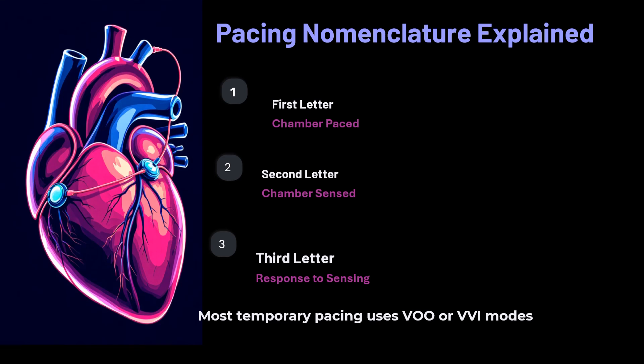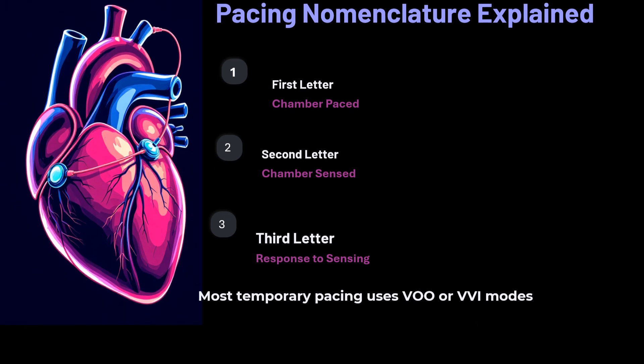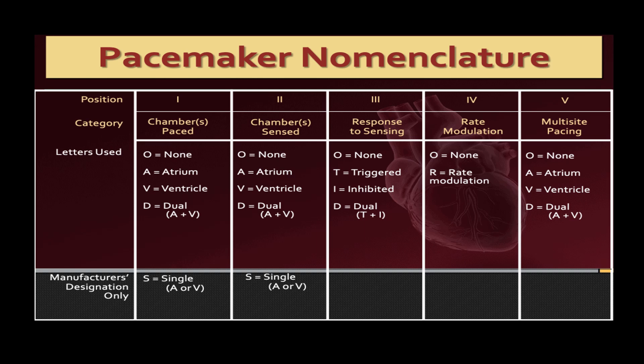Three positions we need to know: the first letter is the chamber paced, the second letter is the chamber sensed, and the third letter is the response to sensing. The most common mode is VOO — ventricular pacing with no sensing and no response. The second common mode is VVI, where the chamber paced is ventricle, the chamber sensed is ventricle, and the response is inhibition to sensing.